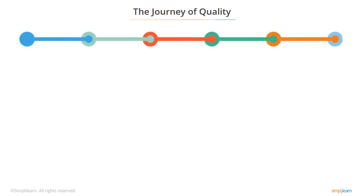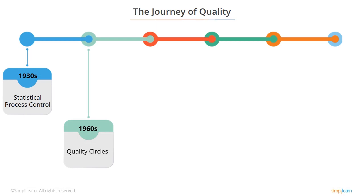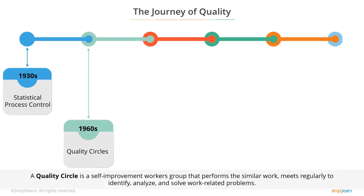Here's a snapshot of the quality journey with a few key milestones. In the 1930s, the idea of statistical process control was conceived by Walter Shewhart to monitor and control a process using statistical methods. This was used extensively during World War Two to quickly expand the industrial capabilities of the US. In the 1960s, quality circles were formulated — a self-improvement workers group that performs similar work, meets regularly to identify, analyze, and solve work-related problems.